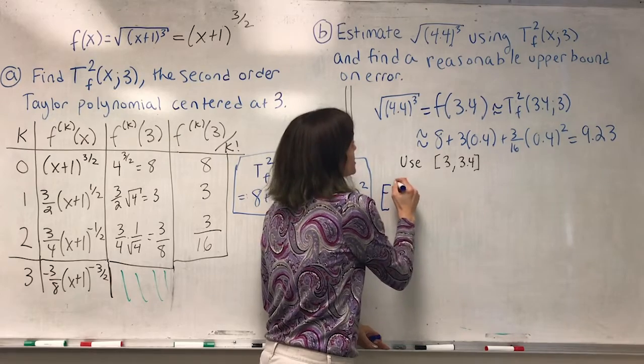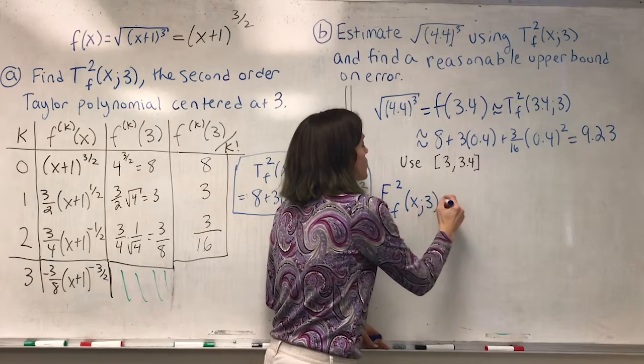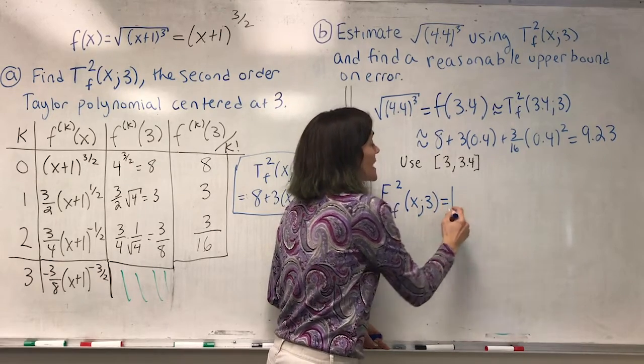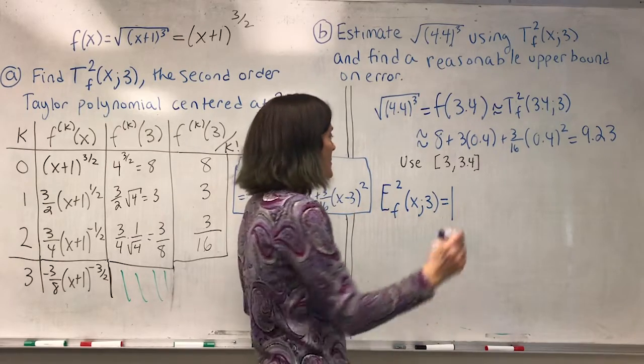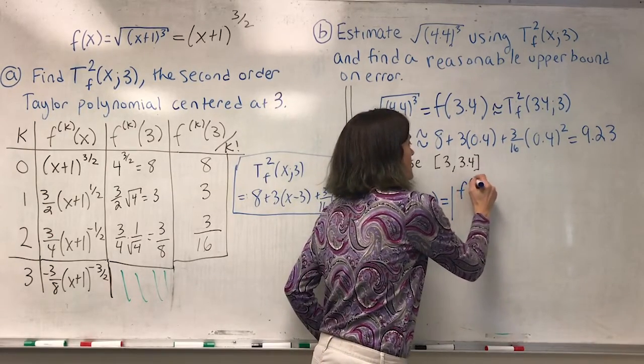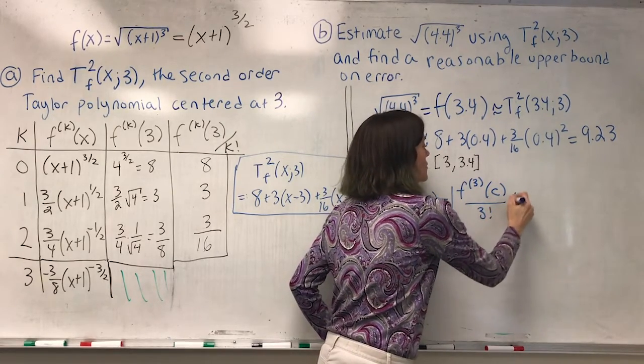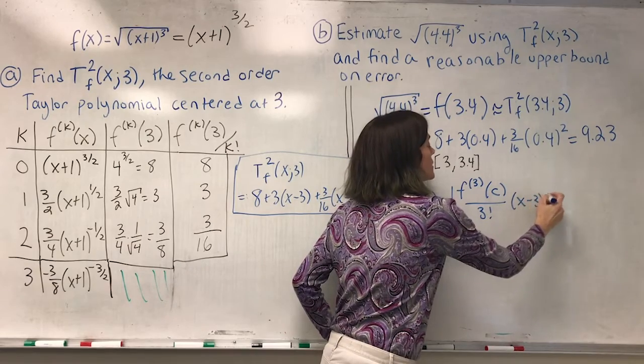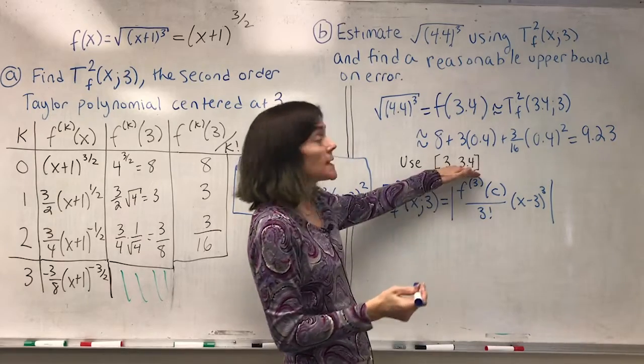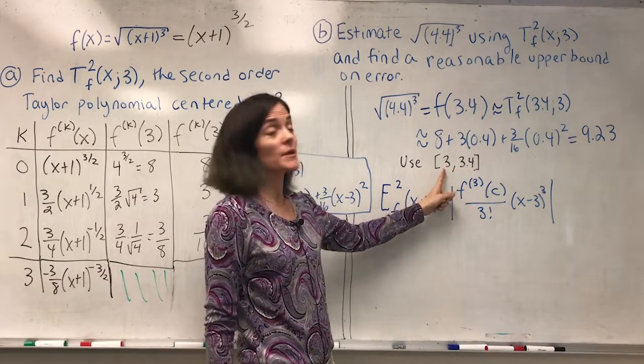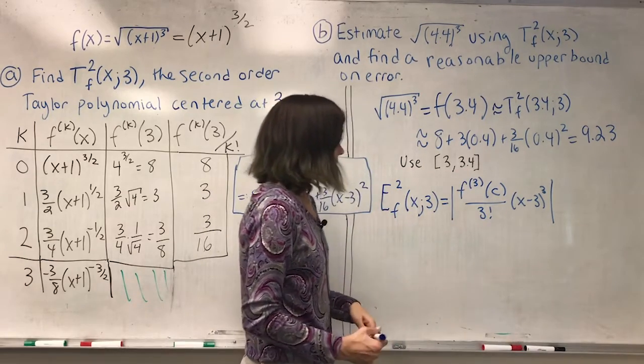So my error, which is E₂(f, 3), will be equal to the absolute value of the remainder. And we know by Taylor-Lagrange theorem, this will be the third derivative at some c over 3 factorial times (x minus 3) cubed, where c is in this interval between 3 and 3.4. And we don't solve for it.